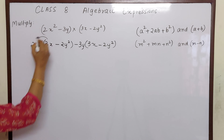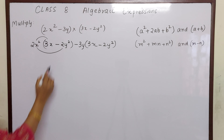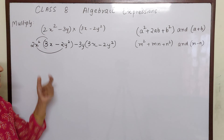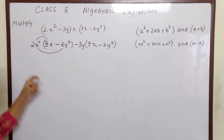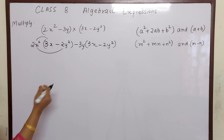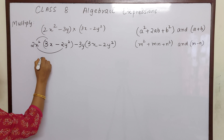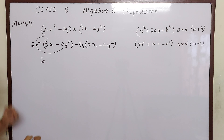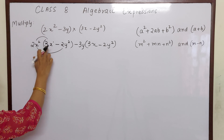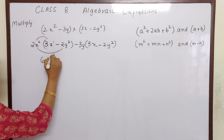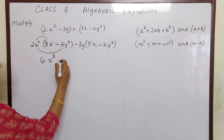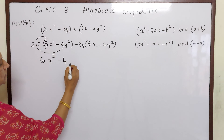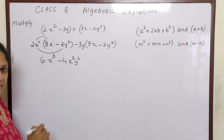Before multiplying, we have to multiply 2x² with this expression. We always first multiply the sign. Plus into plus is plus. 2 × 3 = 6. x² into x — here there is no power, meaning it is 1 — so x² into x¹ is x³. Plus into minus is minus. 2 × 2 = 4. x² into y² gives x²y².